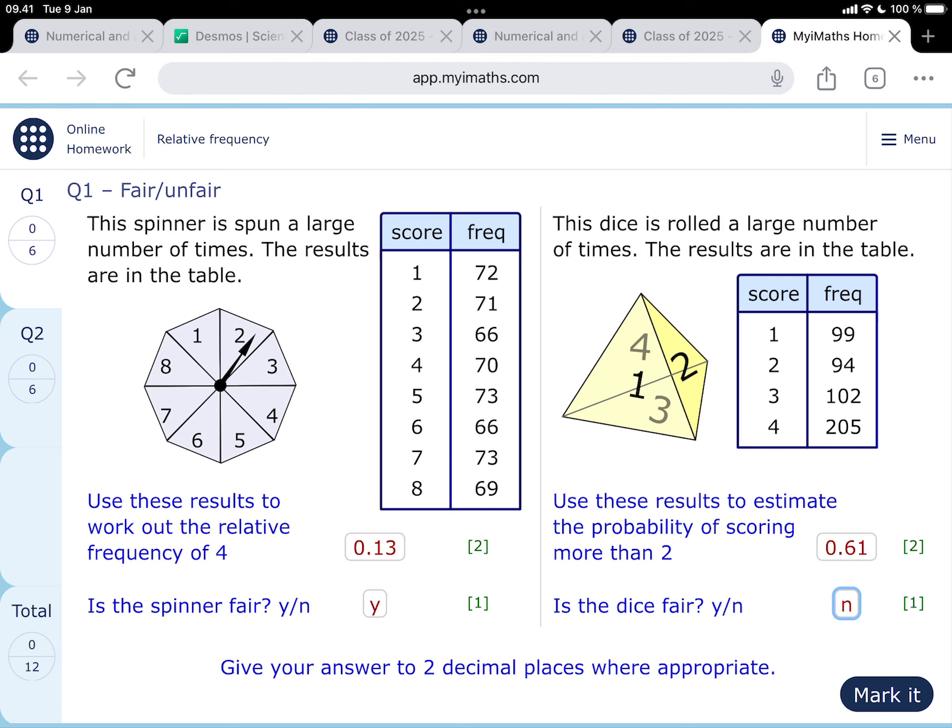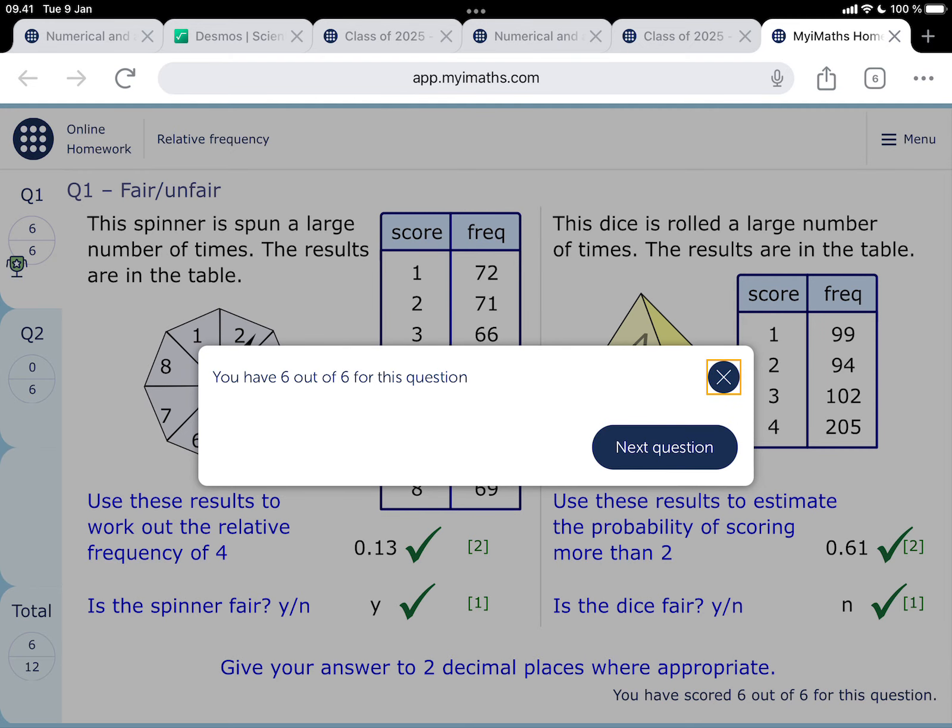Over on MyMaths I've filled in 0.61. I've rounded the 0.614 to two decimal places, and then in this case we're saying it's not fair if we're throwing the thing 500 times and getting twice as much of a four as anything else. Throwing it 500 times, intuitively at least, and there are more sophisticated ways of evaluating this that you'll learn later on, but intuitively it seems that it's definitely not fair. Let's mark it, and six out of six. On to question two.